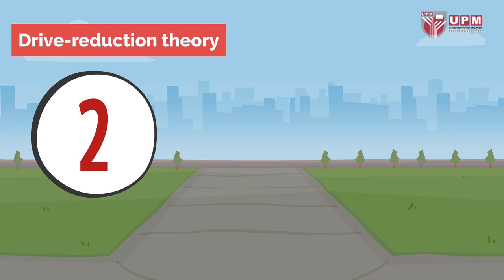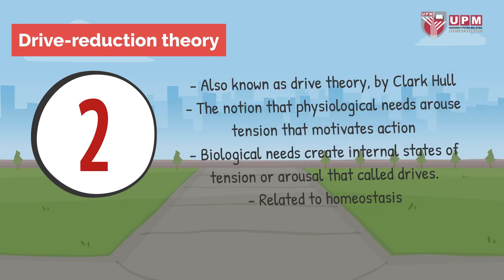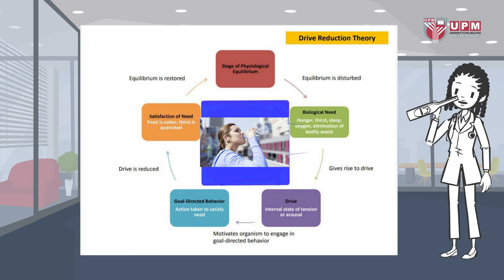Drive reduction theory, also known as drive theory, by Clark Hull. The notion that physiological needs arouse tension that motivates action. Biological needs create internal states of tension, and it is also related to homeostasis. Hull used the term drive to refer to the state of tension or arousal caused by biological or physiological needs. Thirst, hunger, and the need for warmth are all examples of drives. A drive creates an unpleasant state, a tension that needs to be reduced. In order to reduce this state of tension, humans seek out ways to fulfill these biological needs — for example, getting a drink when thirsty or turning up the thermostat when cold. Hull suggested that humans will then repeat any behavior that reduces these drives.